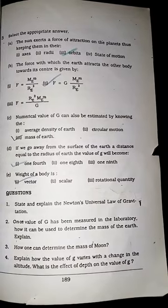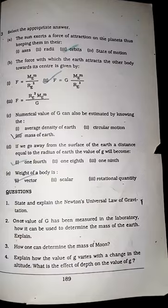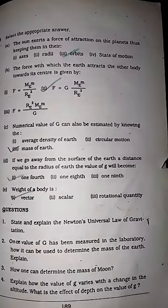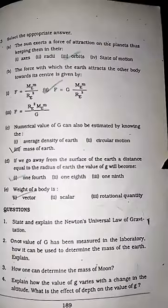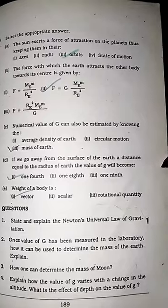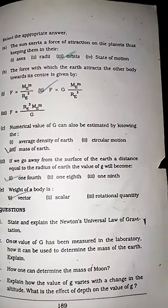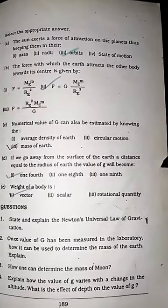Now MCQ number B: The force with which the earth attracts the other body towards its center is given by... We have learned Newton's law of gravitation, and in that the formula for force is given: force equals gravitational constant times mass of earth...